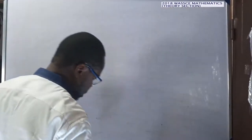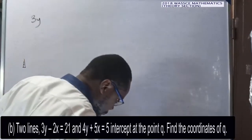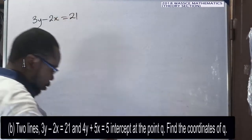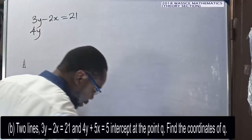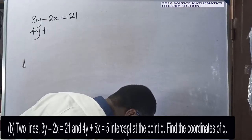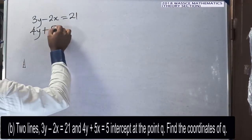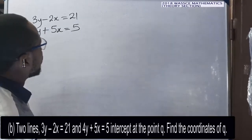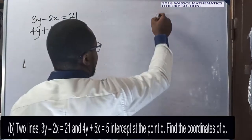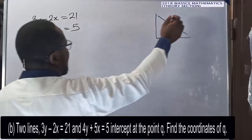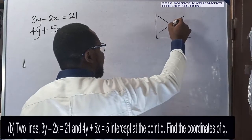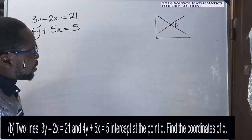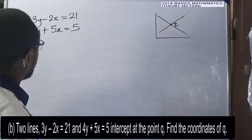The problem gives two lines: 3y minus 2x equals 21, and 4y plus 5x equals 5. They intersect at point Q. If I draw this on a graph, assuming this is my graph, this is the line of the first equation and this is the line of the second, and the two of them intersect at Q.